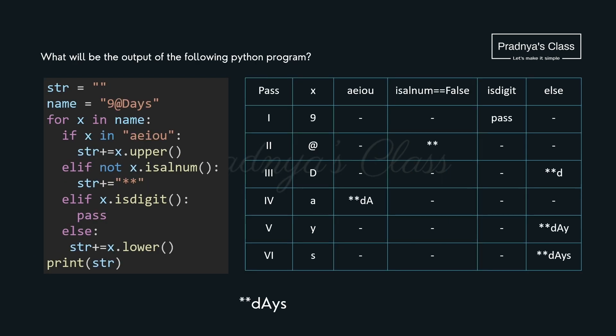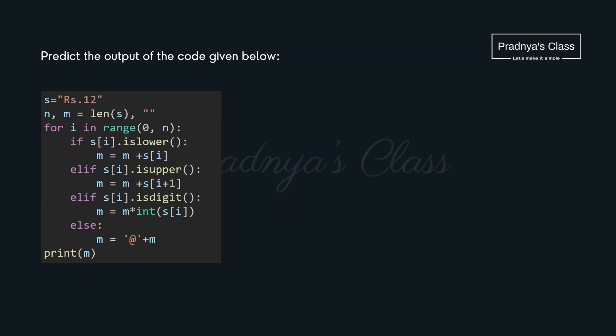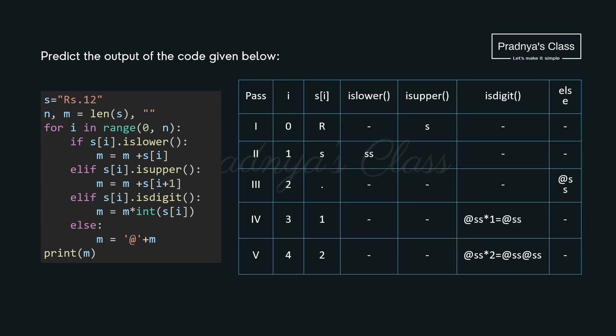For your practice, here is one more example with a dry run table too. So if you make mistakes, you can cross check your answer and correct it. Here is the assignment for you — do it yourself. Hope you will surely get the correct output. Let me help you with the dry run table. Here is the final output. When you do it yourself, you will feel it is very interesting. Give it a try.